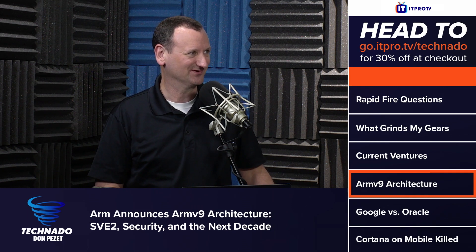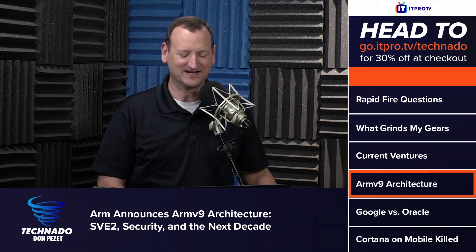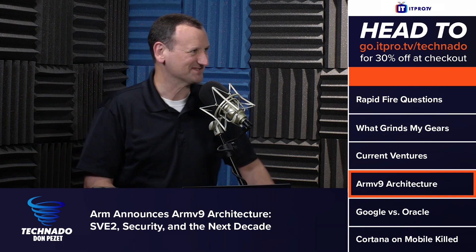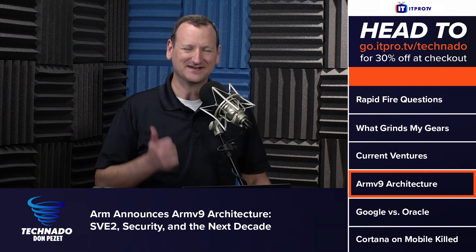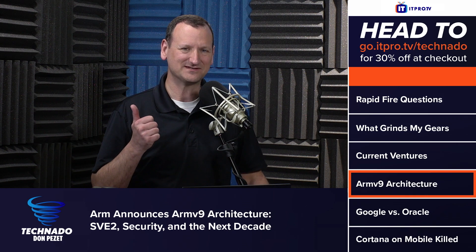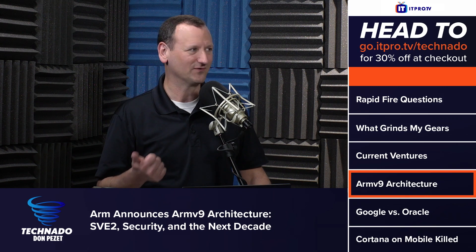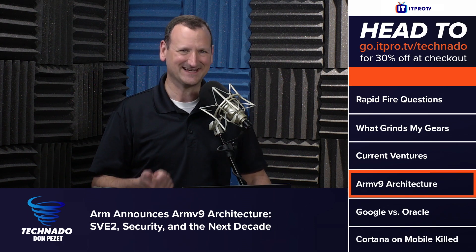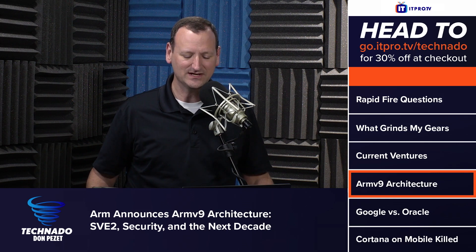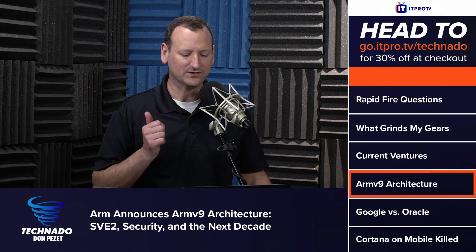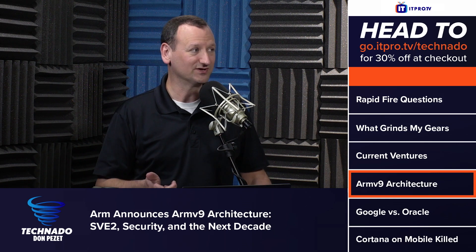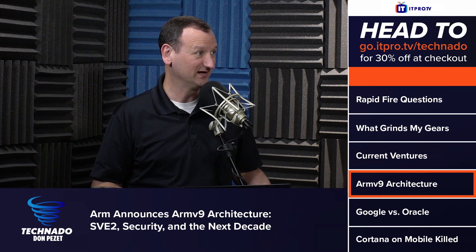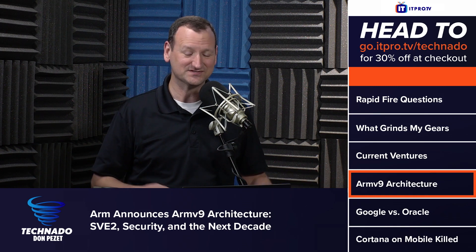I don't want to be the spoilsport or negative Nancy, but I wasn't terribly impressed by all the new features they announced. There's basically a 30% performance increase, which just doesn't seem as high as it should be for a whole new architecture. There's a whole new machine learning module built into it, which if you're doing machine learning you care about — for the rest of us it's just wasted hardware.